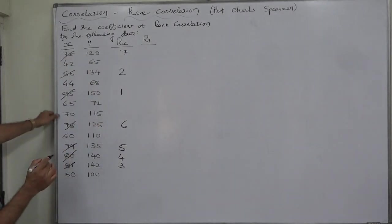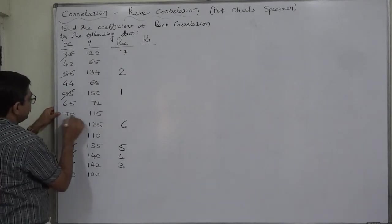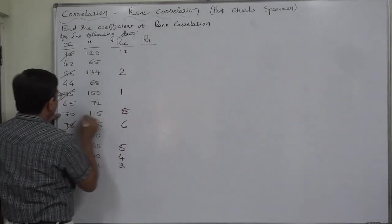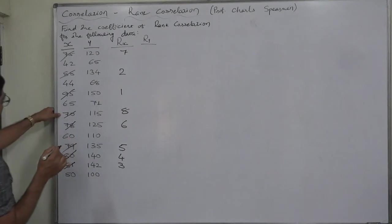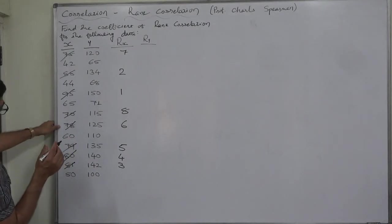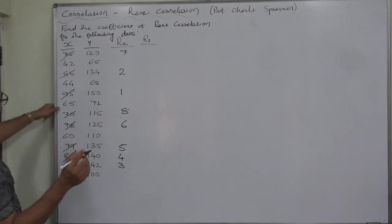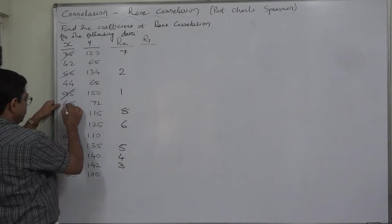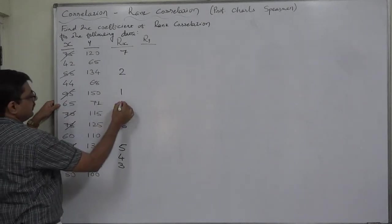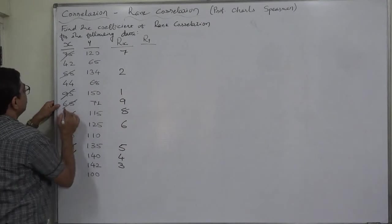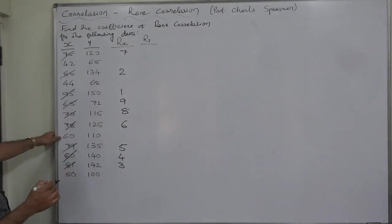After 75, 74, 73, 72, 71 is not there but 70 is there. It will be assigned 8th rank. Now, 69, 68, blah, blah, blah. So, 65 will be assigned rank 9. Then, 60 will be assigned rank 10.